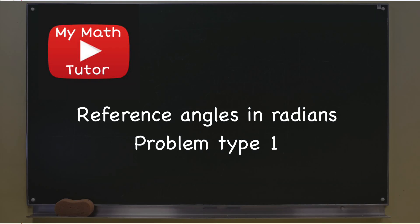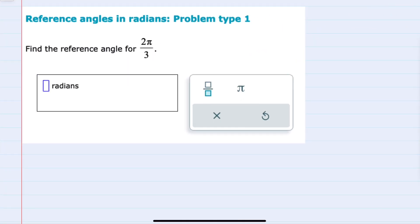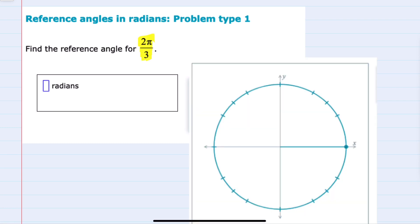In this video I'll be helping you with the Alex problem type called Reference Angles in Radians problem type 1. In this example we're asked to find the reference angle for 2π/3, and to do so I'll start